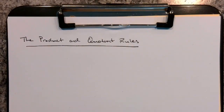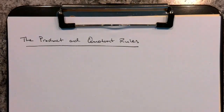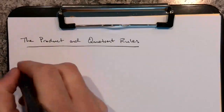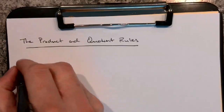This video is on the product and quotient rules. We're going to be talking about the product and quotient rules for derivatives. When we approach this, it's really identifying for a product — and we'll start with that. If you have a function times a function, how would you take the derivative of that? So let's start with the product rule.